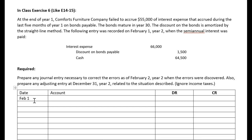On February 1st, we need a correcting entry to fix prior periods' accounts. The problem is what happens to interest expense when we cross a year-end — revenues and expenses are closed to zero. That interest expense no longer has last year's balance. Dividing $66,000 by six gives $11,000 per month, and we forgot to accrue five months, so $55,000 of that $66,000 actually belongs in last year's numbers.